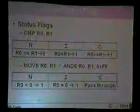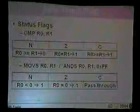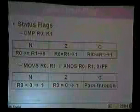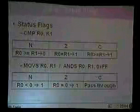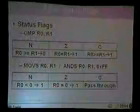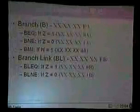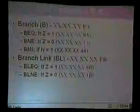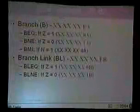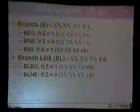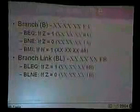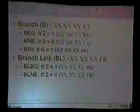The CMP opcode compares a hard-coded value to a register, or register to register. It doesn't move any data — it only updates the status flags. If R1 is greater than R0, the N flag is set. If R0 equals R1, the Z flag is set. The Carry is the opposite of N. MOV with the 'S' suffix updates the status flags after execution: if R0 is negative, N is set to 1; if R0 equals zero, Z is set to 1.